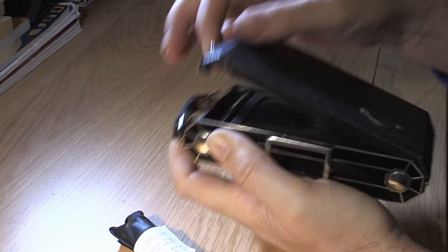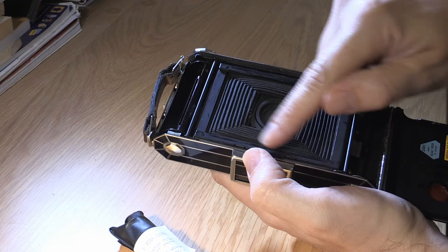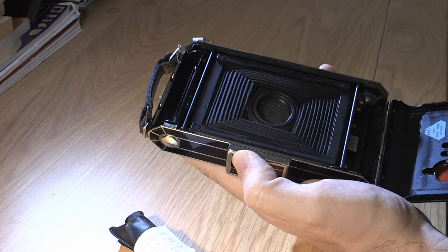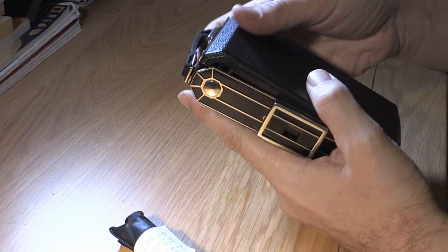So I'll show you the size of the negative. So the size of the negative is roughly the size of this inside bit here. So it's probably six by seven centimeters, something like that. So it's quite an interesting format as well.